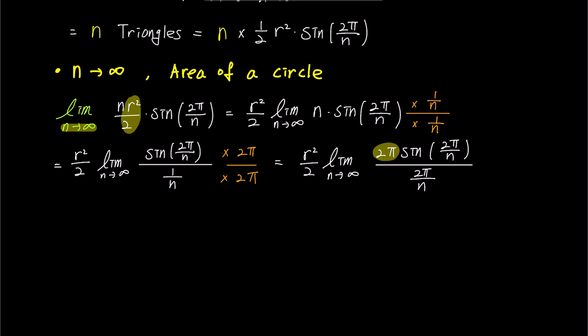The 2π in the numerator is independent of the limit calculation, so it can be moved out front. This simplifies the expression to 2π times r squared over 2 times limit of sin 2π over n over 2π over n. And the factor of 2 in the numerator and denominator cancels out.